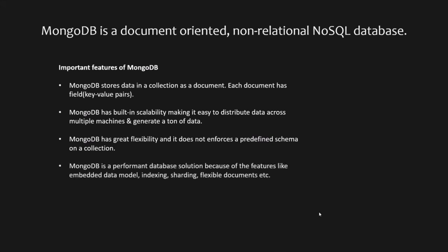MongoDB is also a very performant database solution, because of features like the embedded data model, indexing, sharding, flexible documents, and native duplication. Finally, MongoDB is a free and open source database solution published under the SSPL license. In summary, MongoDB is a great database system to build many types of modern, scalable, and flexible web applications. MongoDB is probably the most used database with Node.js, and that's why it's a perfect fit for this course.